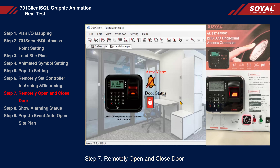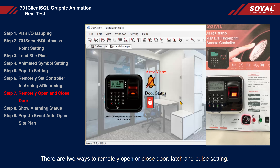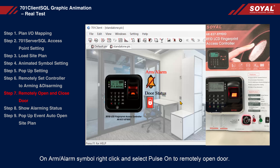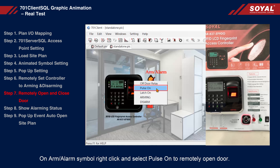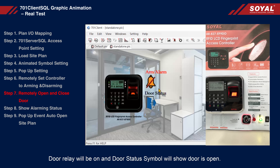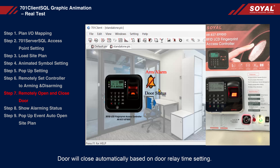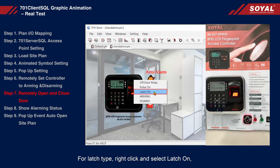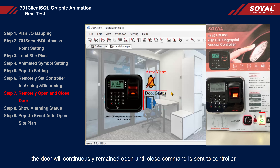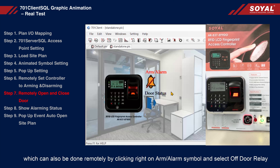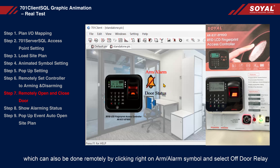Step 7: Remotely open and close door. There are two ways to remotely open or close a door: latch and pulse settings. On the arm/alarm symbol, right-click and select Pulse On to remotely open the door. The door relay will be on and the door status symbol will show door is open. The door will close automatically based on the door relay time setting. For latch type, right-click and select Latch On. The door will continuously remain open until a close command is sent to the controller, which can also be done remotely by right-clicking the arm/alarm symbol and selecting Off Door Relay.